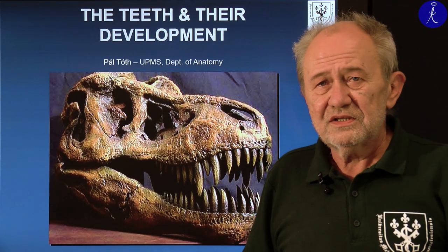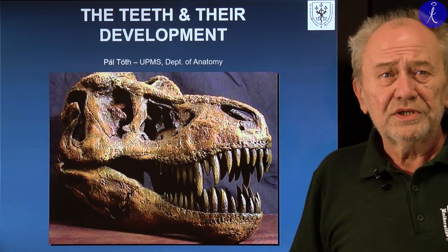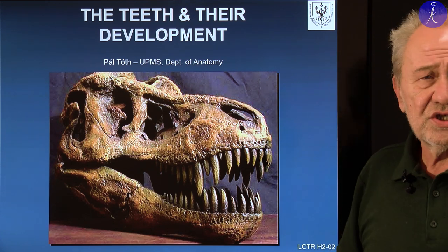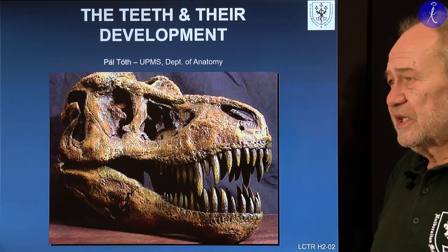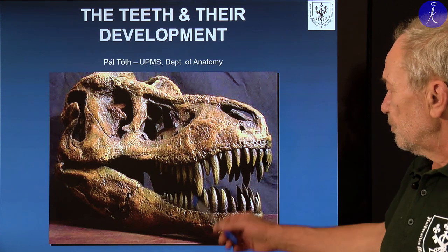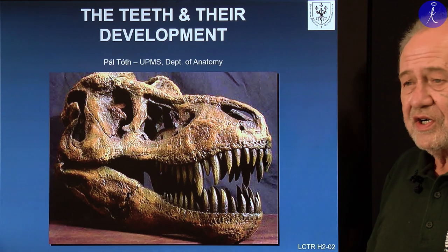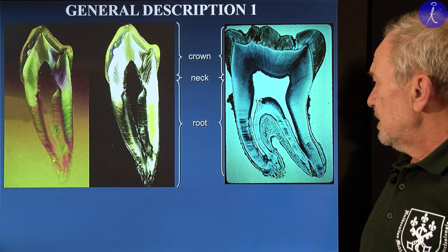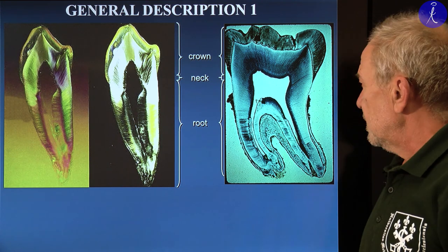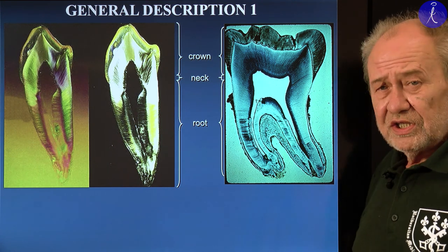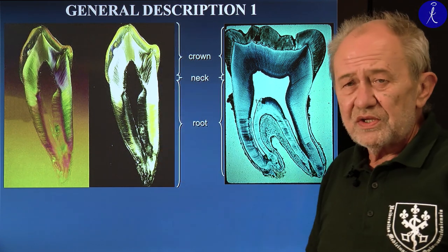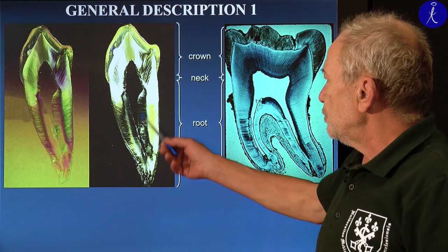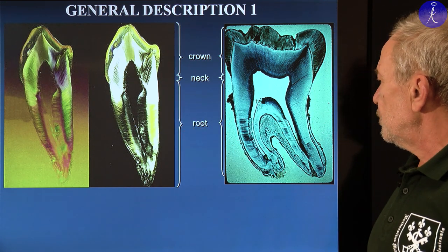Welcome again. Today we are going to talk about the tooth — its development, general structure, and how it develops. This tooth shown is not human, just to show the variability during phylogenesis. This is a human dried-out tooth. Each tooth has, in general, one crown on top — the part we can freely see — which is joined to the root through the neck, a narrow small portion.